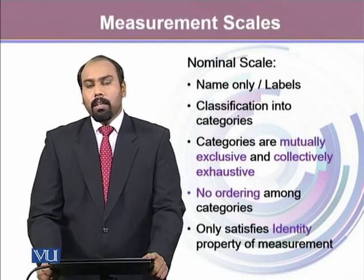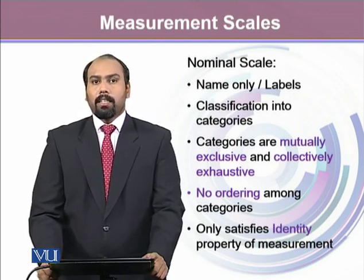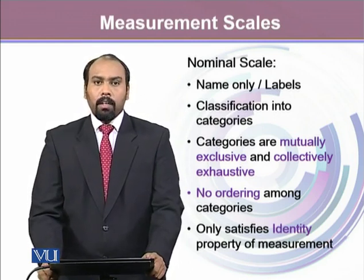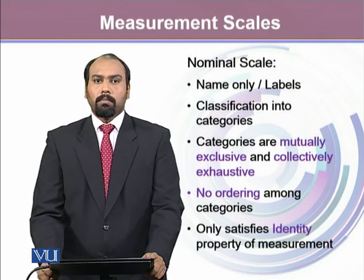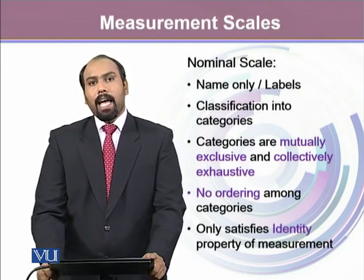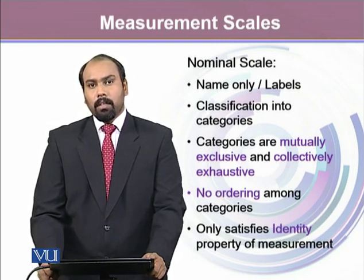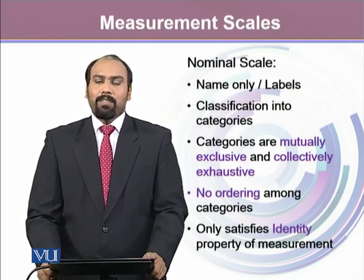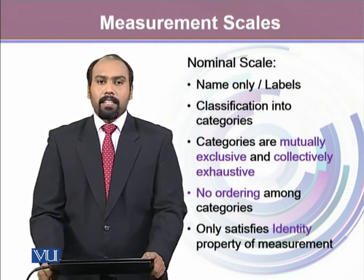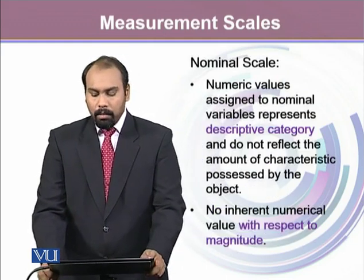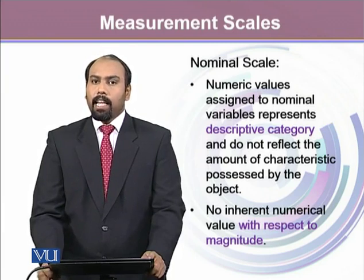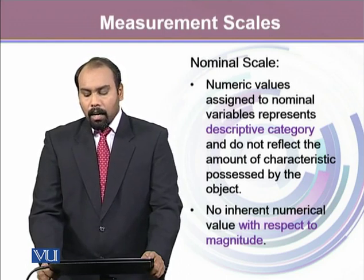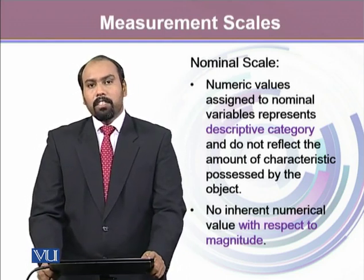For a nominal scale variable, each category is mutually exclusive and collectively exhaustive — 1 is a unique number, 2 is a unique number, and they cannot mix and match. Similarly, they do not have any ordering in the values since these are just the names. They only satisfy the first property of measurement, which is identity. Nominal variables have just a few descriptive categories that do not reflect any amount, and there is no inherent value with respect to magnitude.